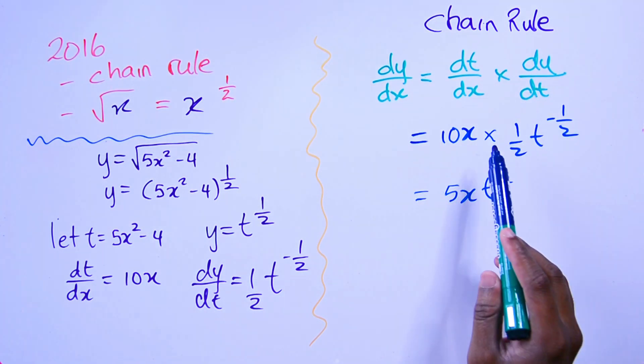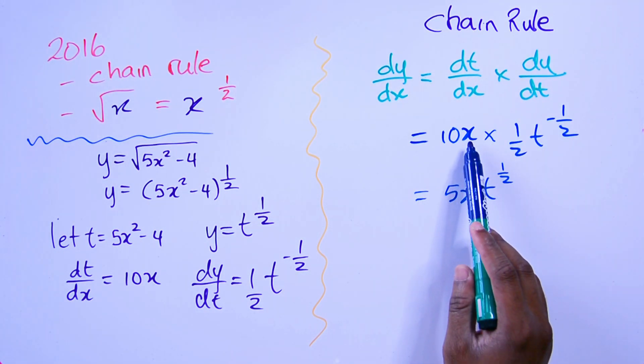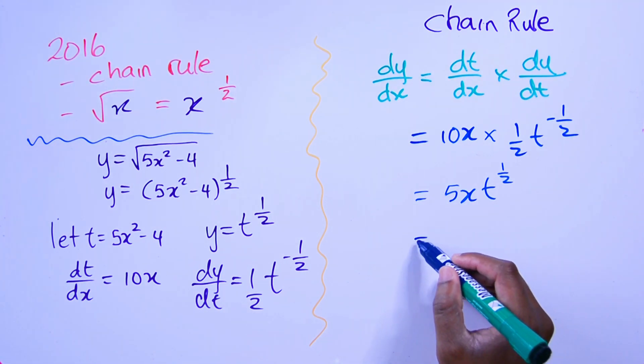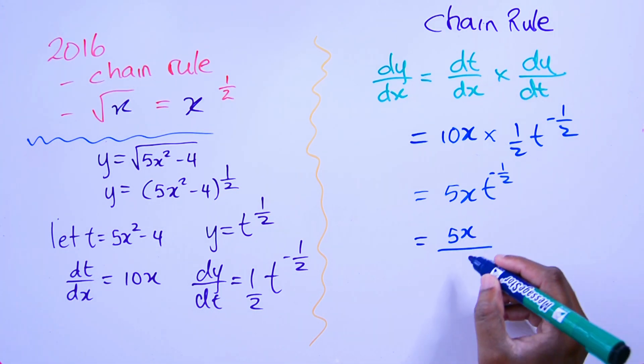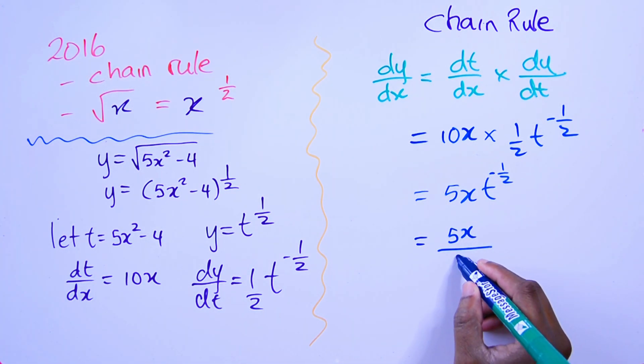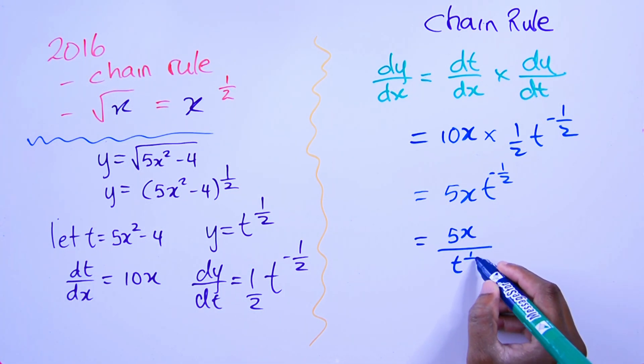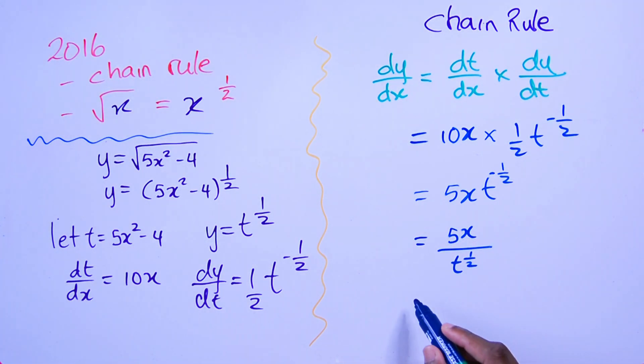This is multiply, so 10 by a half is 5x·t^(-1/2). And then since we have a negative exponent, this should come under here. That's how indices work.